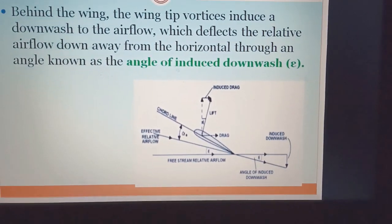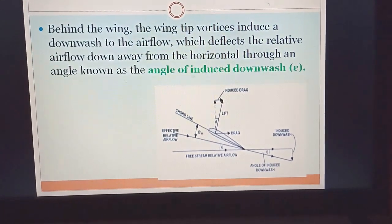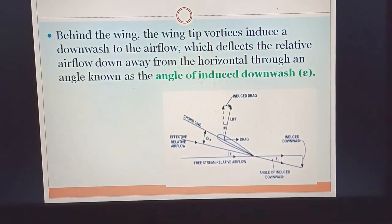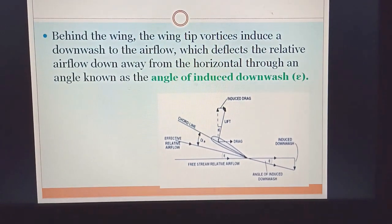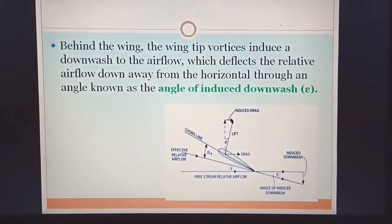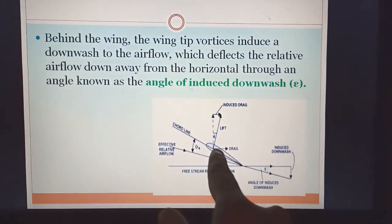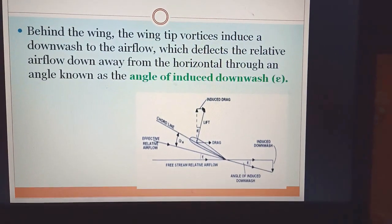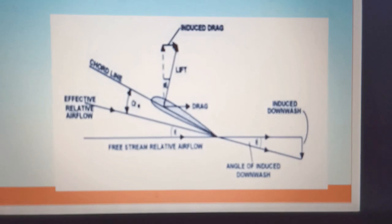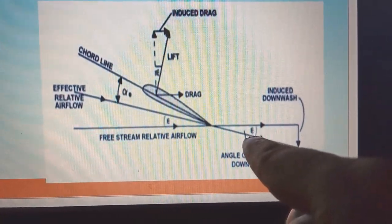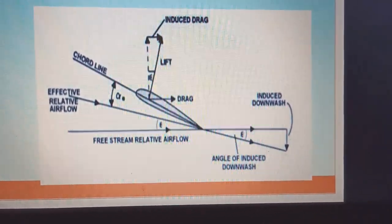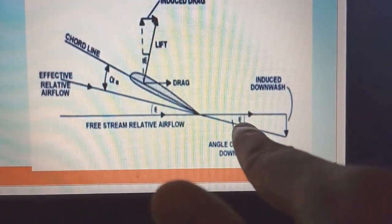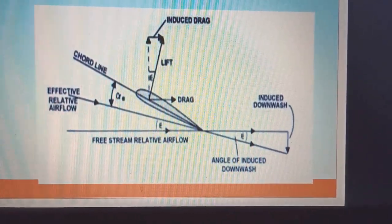Now let's move ahead. Behind the wing, the wing tip vortices induce a downwash to the airflow, which deflects the relative airflow downward away from the horizontal through an angle known as the angle of induced downwash. Downwash and upwash are things we studied earlier. Upwash is seen ahead of the aerofoil, and downwash is seen at the rear side of the aerofoil. Epsilon (ε) is the symbol used to denote the downwash angle.